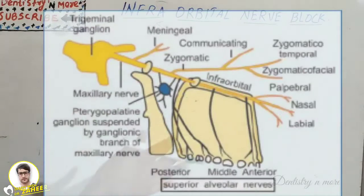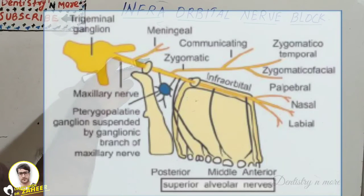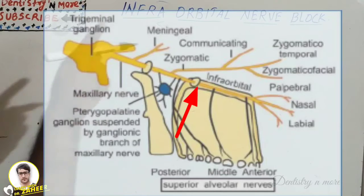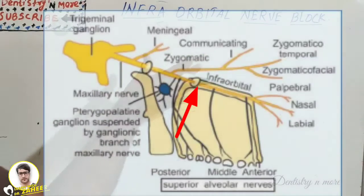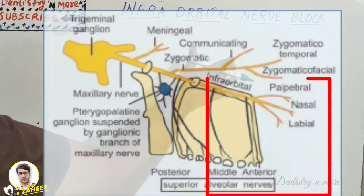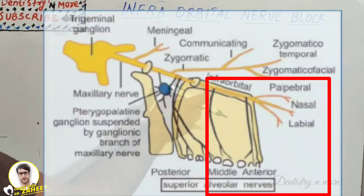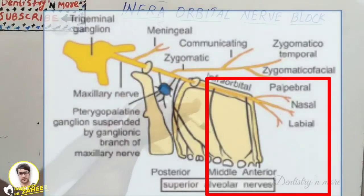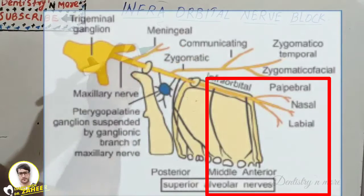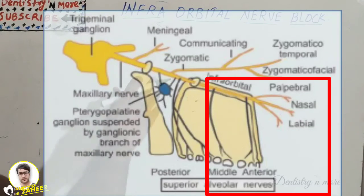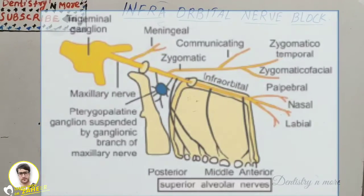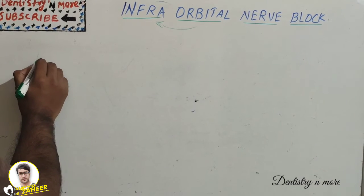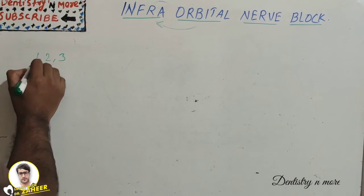Understanding this anatomy will help you get the idea about the anesthetized area. We are going to apply the anesthetic solution at the infraorbital region, which will anesthetize the terminal branches, the anterior superior alveolar nerve, and the middle superior alveolar nerve — because these three are the main branches after the infraorbital foramen. So the anterior teeth — central incisor, lateral incisor, and canine — are supplied by the anterior superior alveolar nerve.